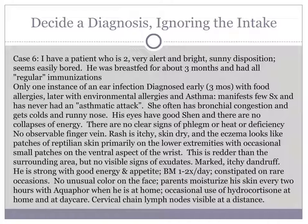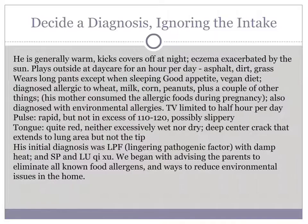He is generally warm, kicks the covers off at night, and eczema is exacerbated by the sun — so why did he say there are no signs of heat? He has a good appetite, is on a vegan diet, and has been diagnosed allergic to wheat, milk, corn, peanuts, plus a couple of other things; his mother consumed the allergic foods during pregnancy. Also diagnosed with environmental allergies. His pulse is rapid, though not in excess of 110 to 120 beats per minute, and possibly slippery. His tongue is quite red — another clear heat sign — neither excessively wet nor dry, with a deep center crack that extends to the lung area but not to the tip.